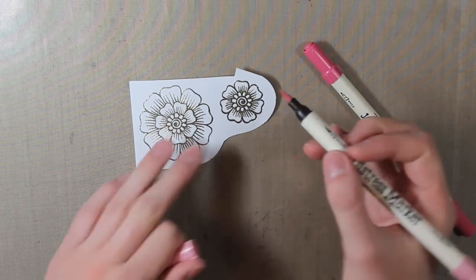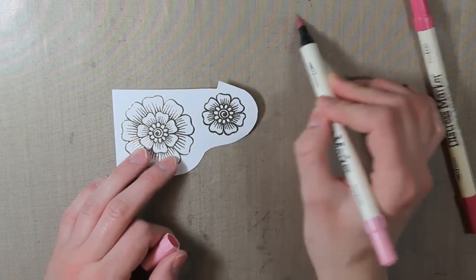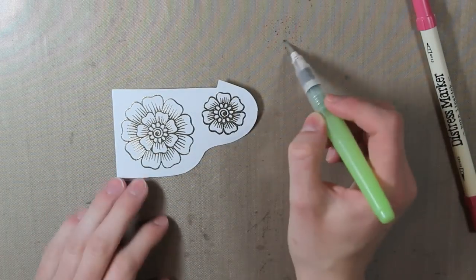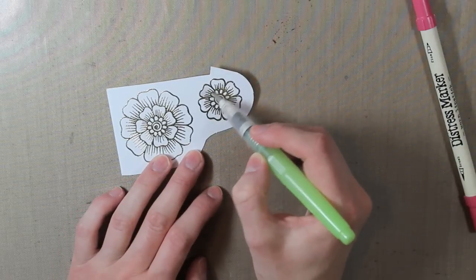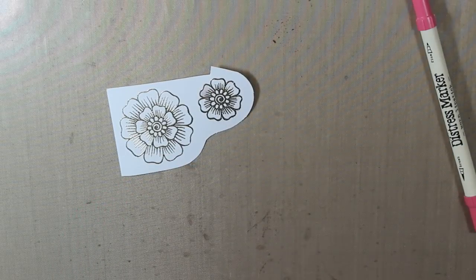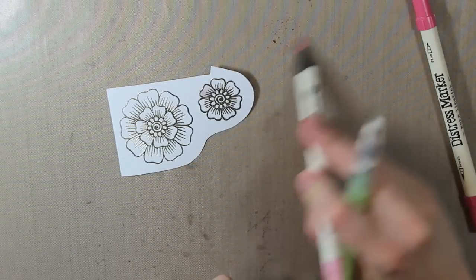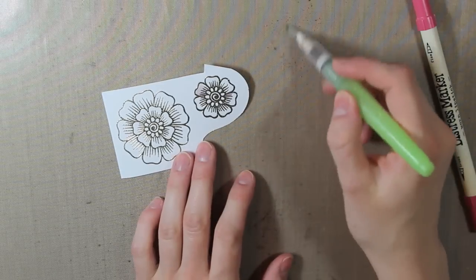And then I'm going to color these in with my Distress Markers. So I have Spun Sugar and Worn Lipstick and my Water Brush. I'm starting with the Spun Sugar and just coloring all of these petals in with that. I want that really light base coat to be on there.